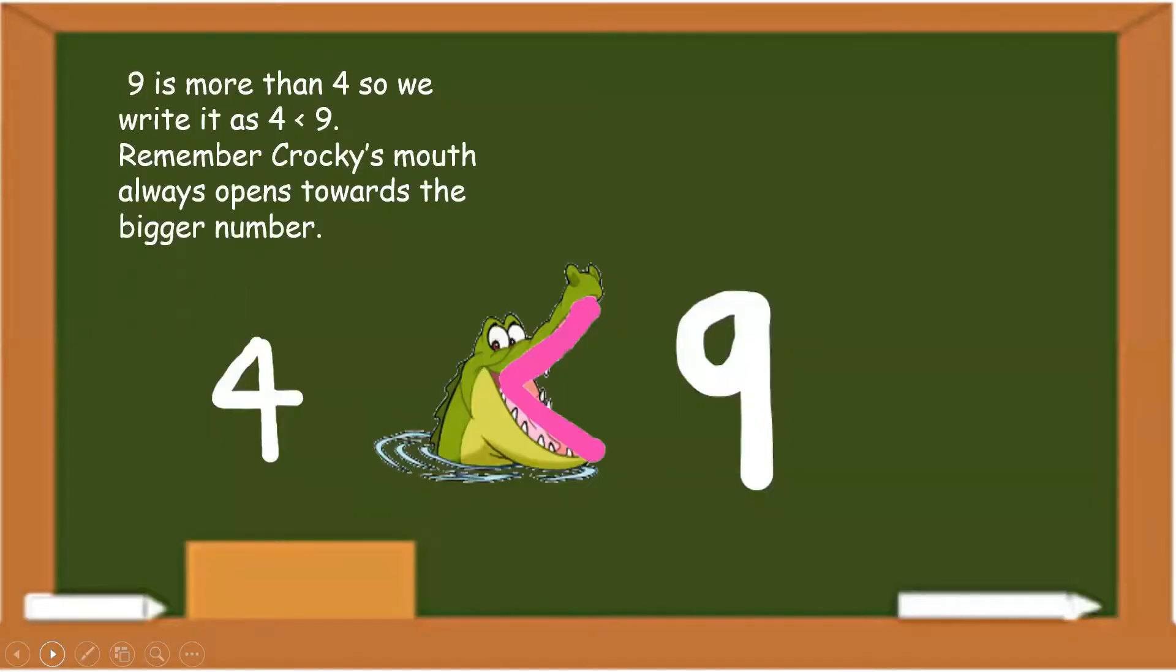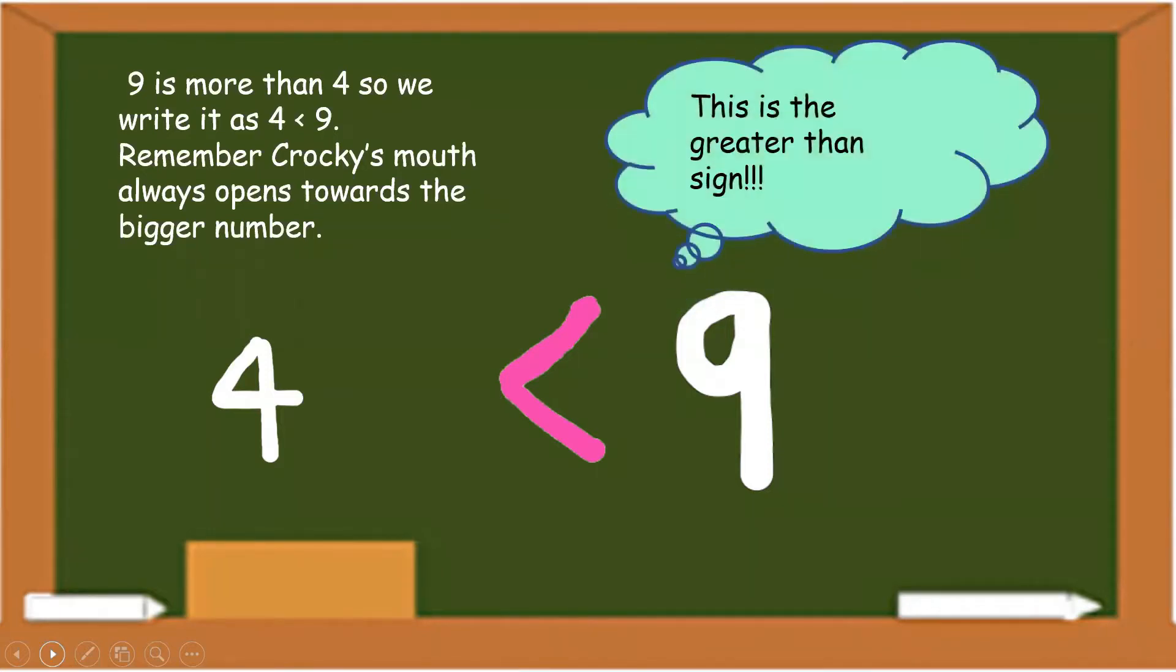Remember children, Crocky's mouth always opens towards the bigger number. Nine is greater than four. Hence, Crocky's mouth will be opening towards the greater number that is nine. This is also called the greater than sign.